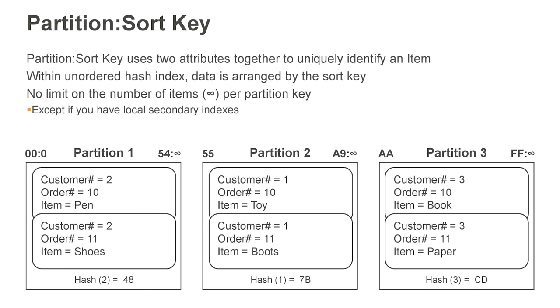When you specify a sort key, all items with the same partition key get co-located on the same storage node, laid out on disk sorted by the sort key value. When you query 'give me all orders for this customer between these dates,' you do one big sequential read on disk. You get a big select statement with no joins and a large sequential read. This is one reason why DynamoDB gives you single-digit, low single-digit millisecond latency — we query the data store very selectively and very efficiently.